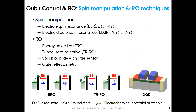There are two main spin manipulation techniques. In electron spin resonance, the oscillating field B(t) is generated by an AC current I(t) flowing through a microstrip line deposited close to the qubits. In electric dipole spin resonance, an oscillating voltage is applied to the gate of a quantum dot. The resulting oscillating electric field causes an orbital motion of the electron in the quantum dot, and in turn a spin rotation if spin-orbit coupling is significant.